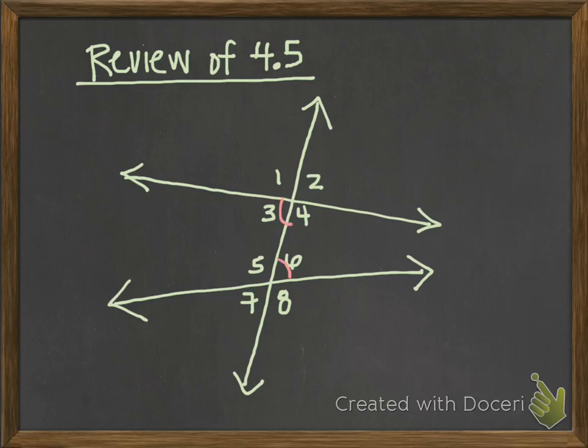Those would be alternate interior angles. Another pair of alternate interior angles would be 4 and 5. We also have alternate exterior angles — these are outside of the two lines in the exterior region. An example of alternate exterior angles would be 1 and 8, and another pair would be 2 and 7.